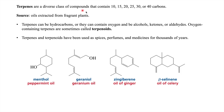Terpenes are a diverse class of compounds containing 10, 15, 20, 25, 30, and 40 carbons in their structure. Regarding their source, when you extract oil from fragrant plants, that oil contains terpenes. Terpenes are hydrocarbons; when these hydrocarbons contain oxygen in the form of alcohol, ketone, or aldehyde, they are called terpenoids.